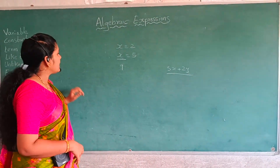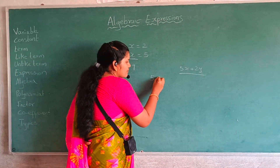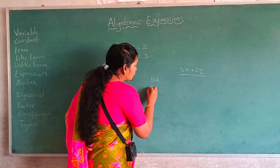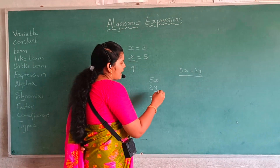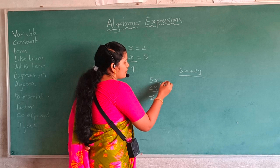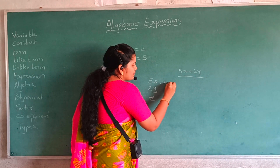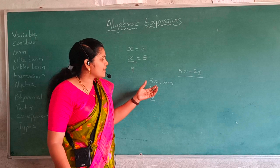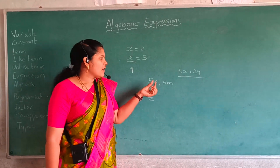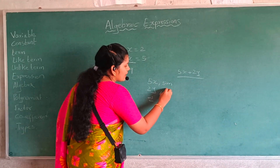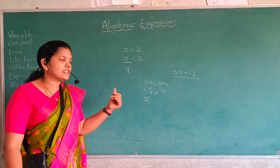And then what is a term? I told you: 5x is a term, 2y is a term, z is a term, 5m is a term, and n is also a term. A single, standalone unit without any connection to another is called a term. These are all called terms.